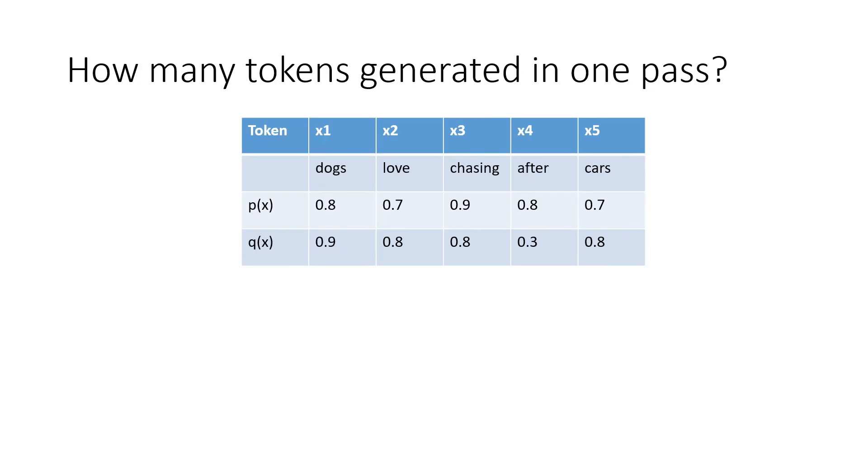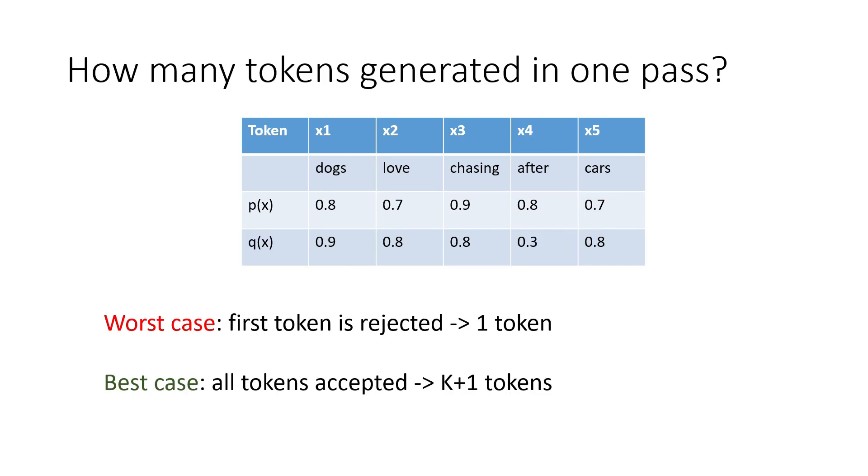So how many tokens are generated in one pass of this algorithm? Let's count. So in the worst case, if the first token is rejected, then this algorithm only generates one token. And in the best case, if all of the tokens are accepted, then we generate K plus one tokens. And this part here is really important because it means that even in the worst case, we are still generating at least one token per forward pass of the large model. So we are at least not making the algorithm any slower.